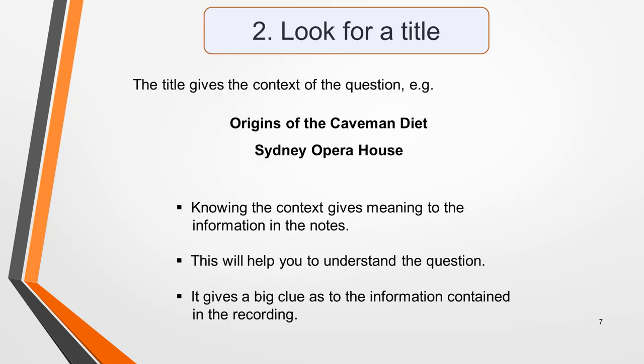Next, look for a title. Not every question will have one, but if there is one, it will tell you the context of the question. This will help you to understand the question and give you a big clue as to what sort of information will be contained in the recording. Both our sample questions have titles. They are Origins of the Caveman Diet and Sydney Opera House.